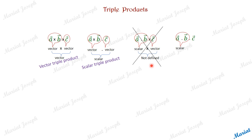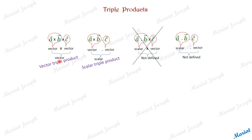The same issue arises in the fourth case: A dot B is a scalar, and C is a vector. A dot product between a scalar and a vector is not defined — scalar multiplication is possible, but not a dot product. So this is also not defined. Out of these four cases, only the first two are valid. The first gives a vector result — vector triple product. The second gives a scalar result — scalar triple product.